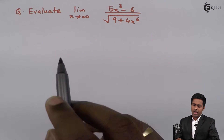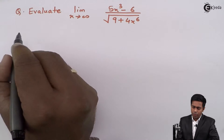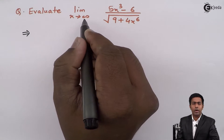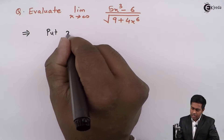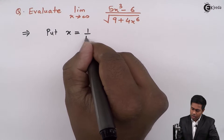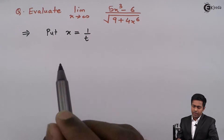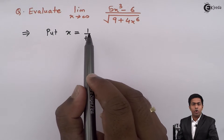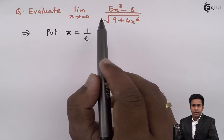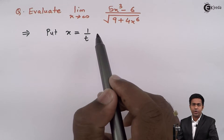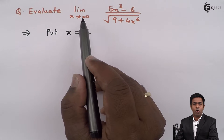Since we have limit x tends to infinity, we will put x as 1 upon t. We will start our solution by substituting x as 1 upon t. When we substitute x as 1 upon t, this problem will shift from the x domain to the t domain, and hence we have to find the new limit for t.